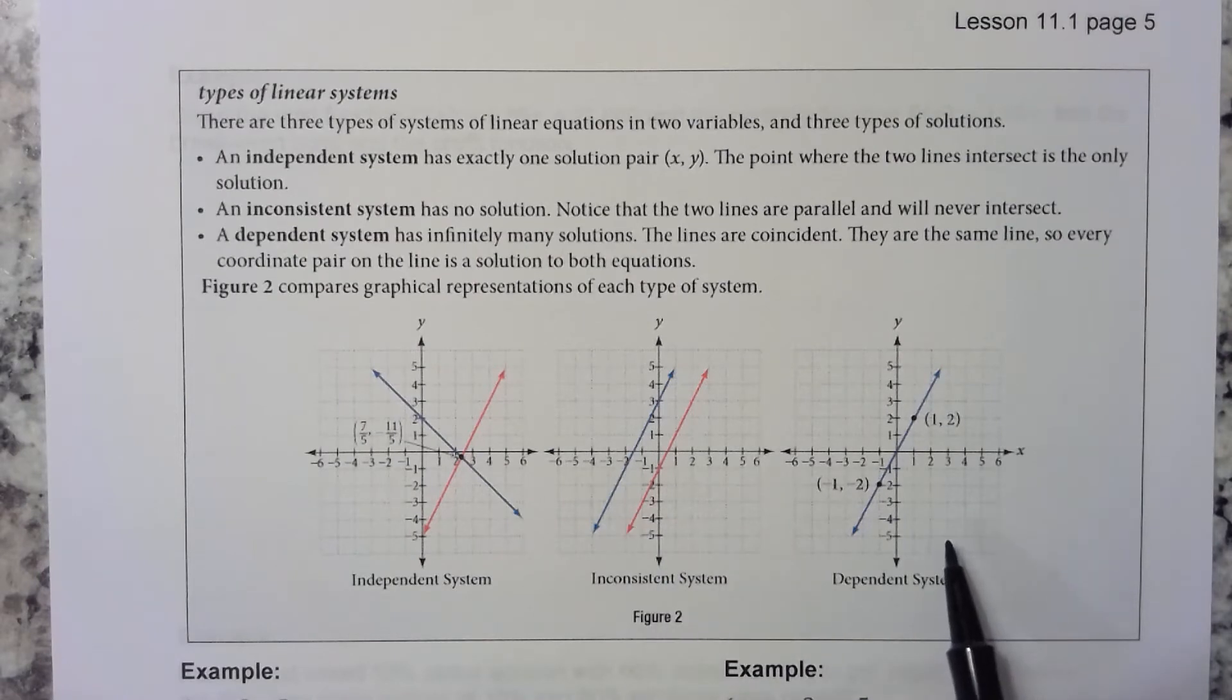You can also have a dependent system, and that means when you graph one line and then you graph the other line, they are the exact same lines. That's called a dependent system. And if this is the case, you have infinitely many solutions.